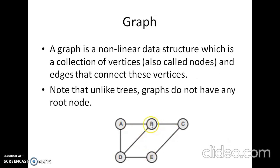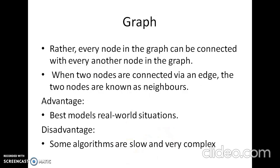For example, B is a neighbor to A, C, and D. The advantage of a graph is that it best models real-world situations, such as nodes representing cities and edges representing roads. A graph can also be used to represent a computer network where the nodes are workstations and the edges are the network connections. The disadvantage is that some algorithms are slow and very complex. Examples include the traveling salesman problem and graph coloring.